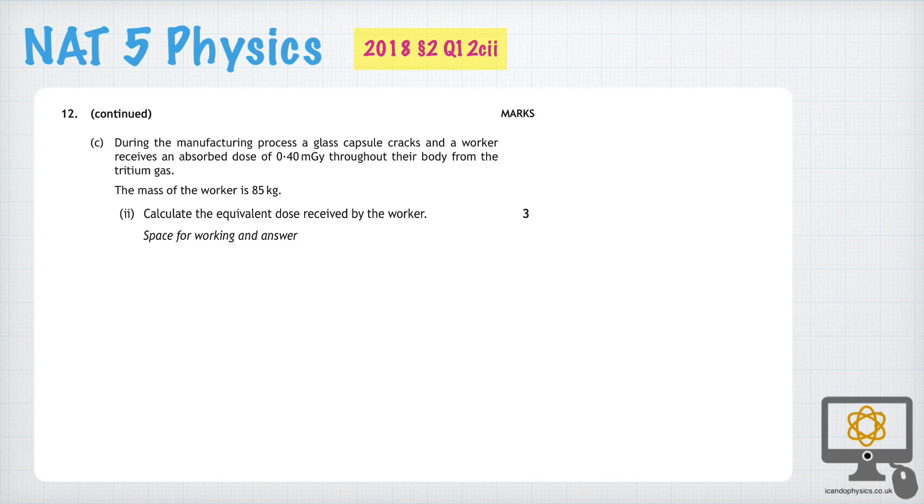The final question in the 2018 National 5 Physics paper is 12C part 2, which asks us to determine the equivalent dose received by the worker.